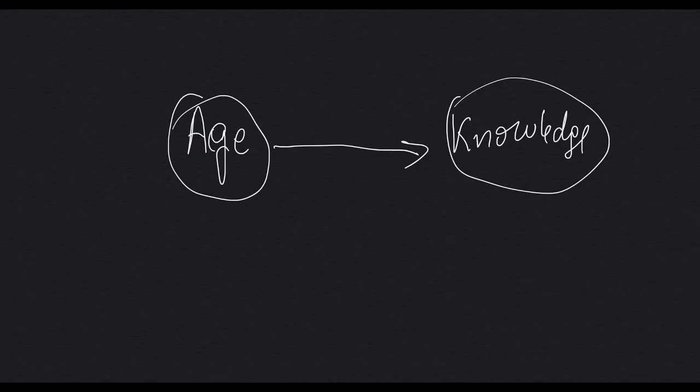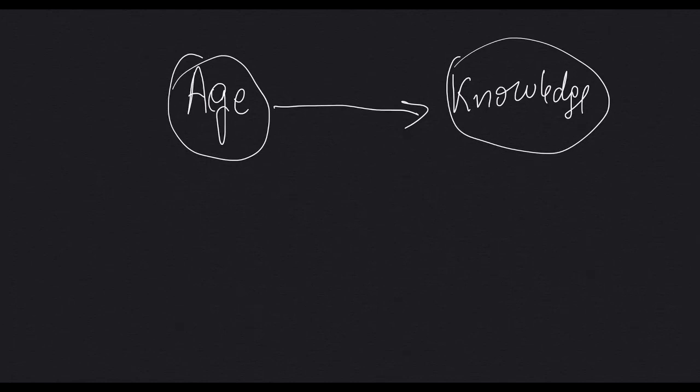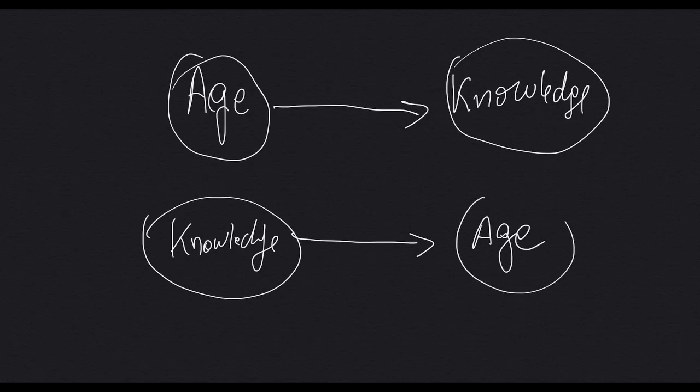And the fourth important thing is that it should be a plausible model. Like, for example, the opposite of this one: knowledge causes age. Well, that is not a good model because knowledge cannot produce a change in age.